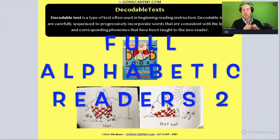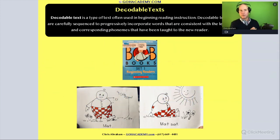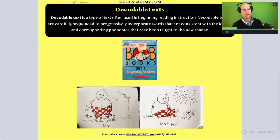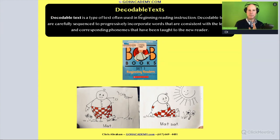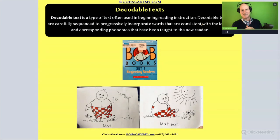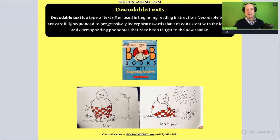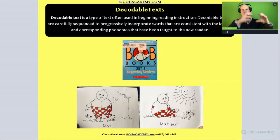Let's talk about decodable text. Now, I know we've looked at this before in phonics. Let's look at it again — decodable text is a type of text often used in beginning reading instruction. Decodable texts are carefully sequenced to progressively incorporate words that are consistent with the letters and phoneme correspondences that have been taught to the new reader. This is a decodable text structured to teach a phonics rule, and as you go to a new book, they teach a new rule.